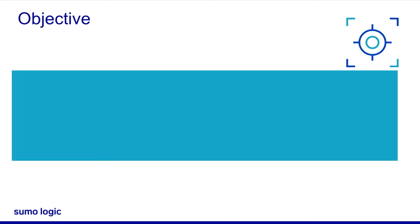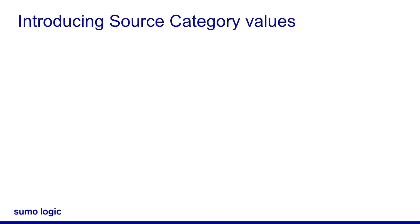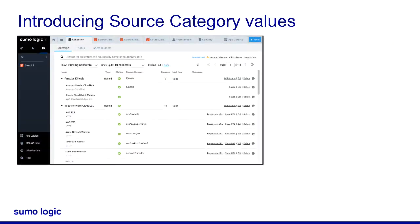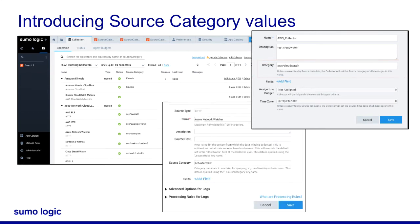At the end of this lesson you will be able to describe the best practices of organizing source category values. In Sumo Logic, source category is a completely open metadata tag, which means you can enter any value you like. This field is created when you enter text into the source category field when configuring a collector or a source.